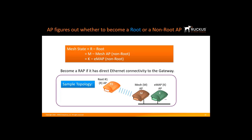An AP needs to figure out whether to become a root or a non-root AP. Non-root APs need to determine if they are a MAP or an EMAP. The mesh states are R for root, M for a meshing AP, and K for an EMAP. A root AP has a direct connection to a gateway. A non-root AP has a wireless hop and its wireless connection is not directly connected to a gateway. In summary, non-root APs do not have a direct wired connection to a gateway and have one or more wireless hops to a root AP.